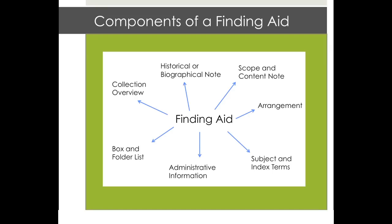All finding aids share certain components, no matter what institution you are visiting. These components can include the collection overview, the historical or biographical note, the scope and content note, a note on the collection's arrangement, the subject and index terms, administrative information, and a box and folder list.